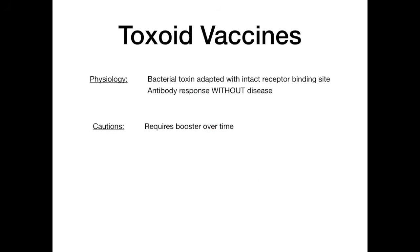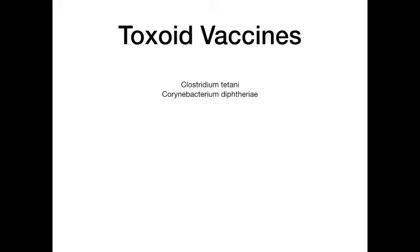To summarize the toxoid physiology: the bacterial toxin is adapted and you must leave that intact receptor binding site in place. This does cause an antibody response but does not cause the disease. Cautions: these require some boosters over time. There are only two toxoid vaccines you need to know — Clostridium tetani (tetanus) and Corynebacterium diphtheriae (diphtheria). A simple mnemonic: toxoid starts with T and ends with D — tetanus and diphtheria, T and D.